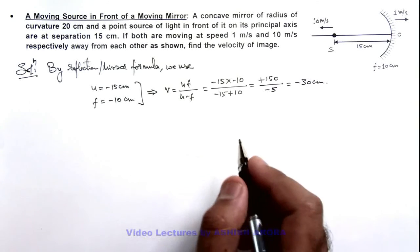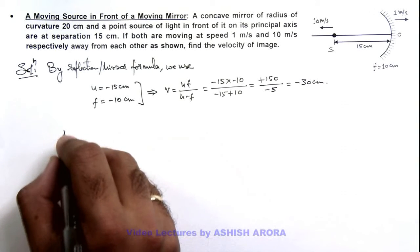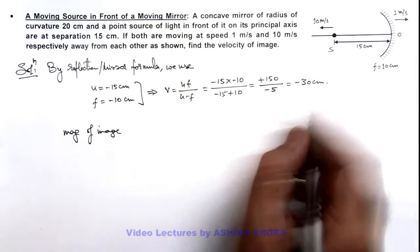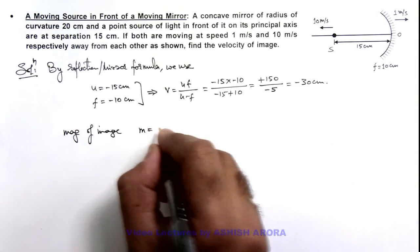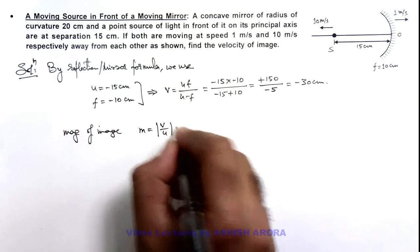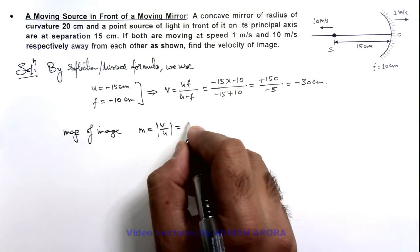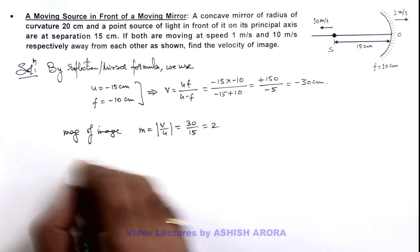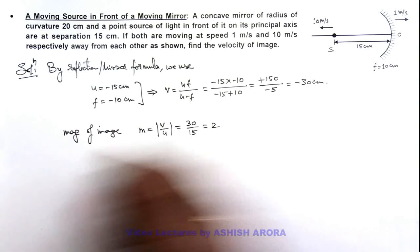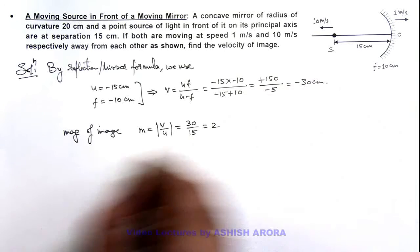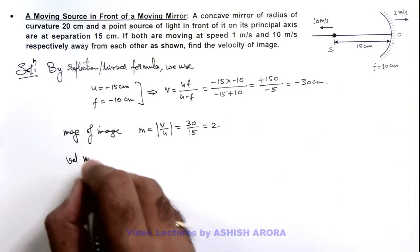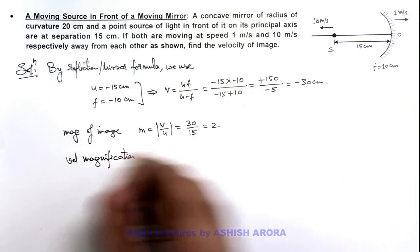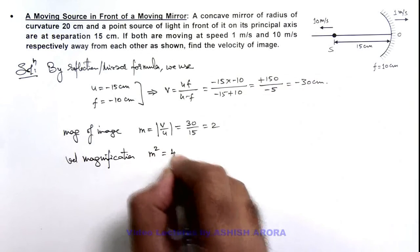Now in this situation, if we check the magnification of the image by the mirror, m equals the magnitude of v by u, which is 30 divided by 15, so magnification is 2. Since the magnification along the principal axis is 2, we can calculate the velocity magnification as m squared, which equals 4.